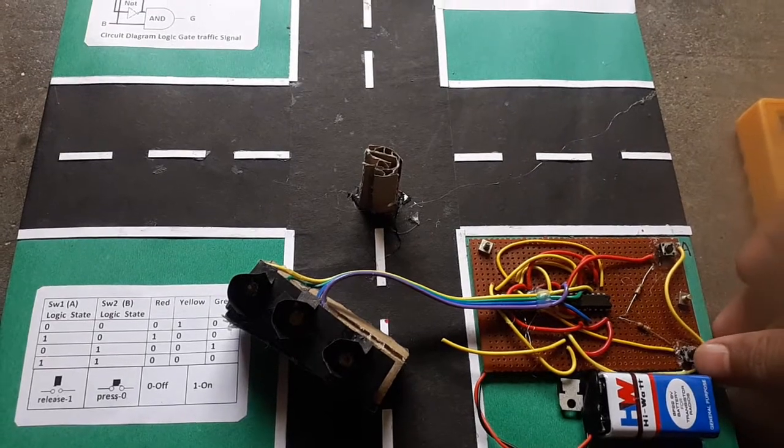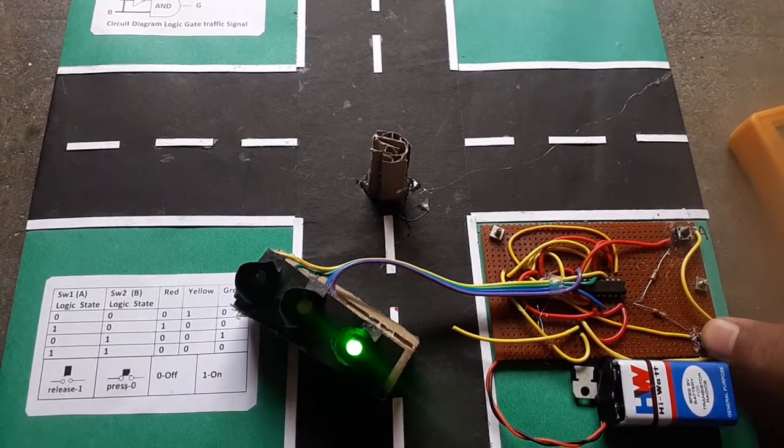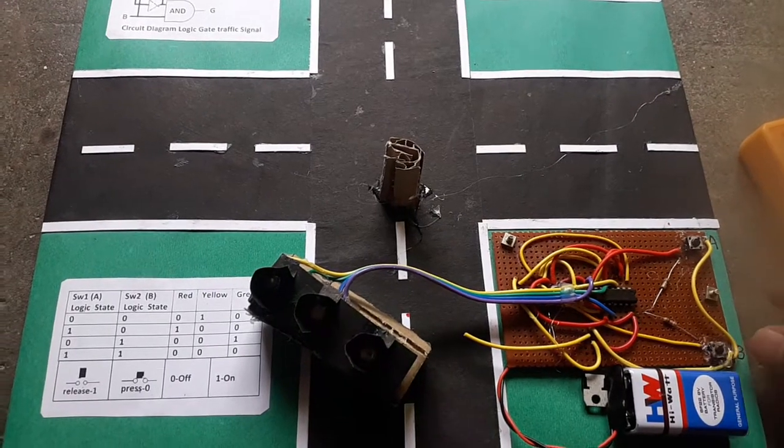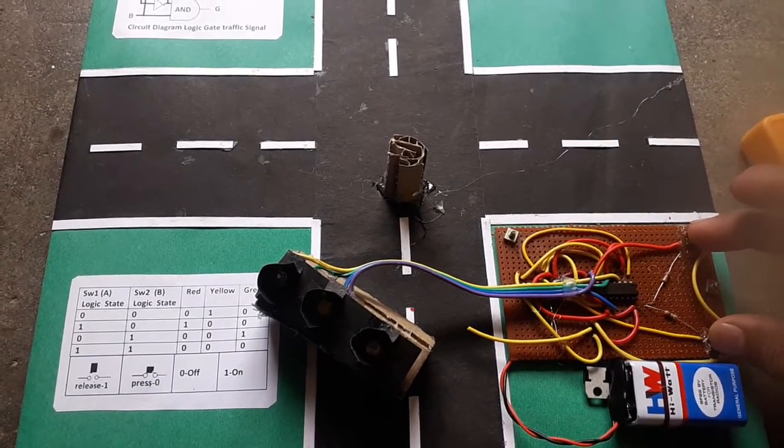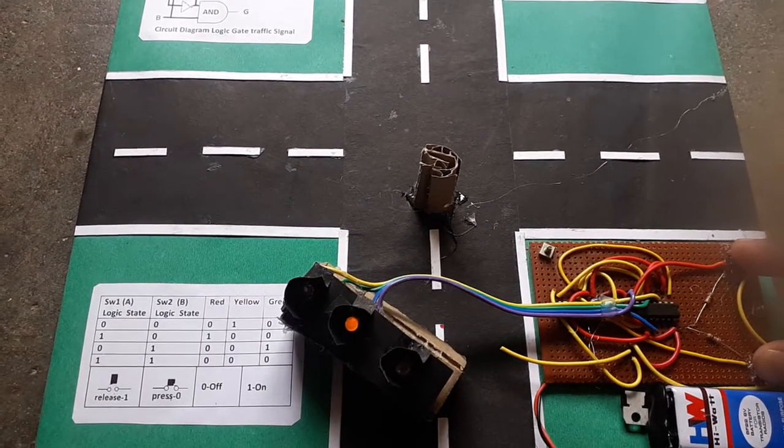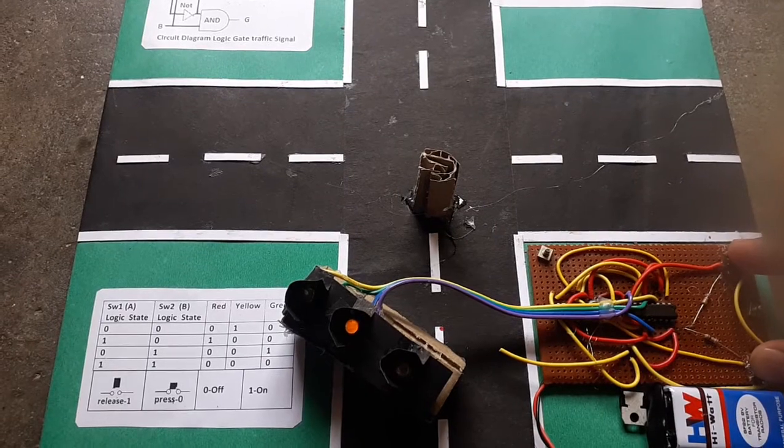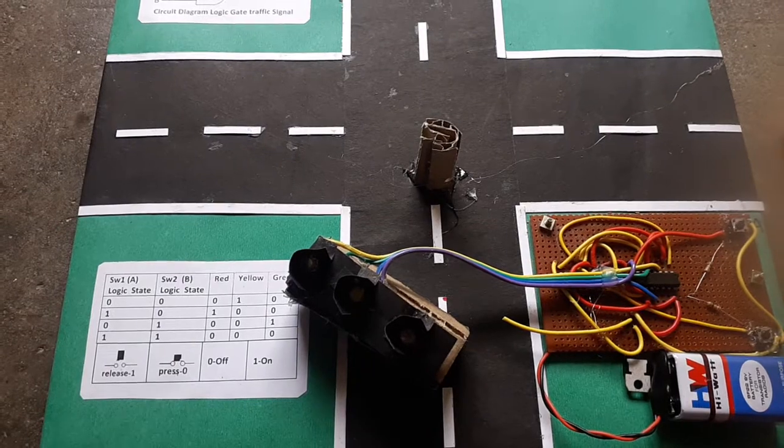Now if you press the second switch which is B switch, the green LED will glow. If you press the combination of both A and B simultaneously you will get yellow LED glowing. This way we will get three LEDs glowing one after the other specific to each logic.